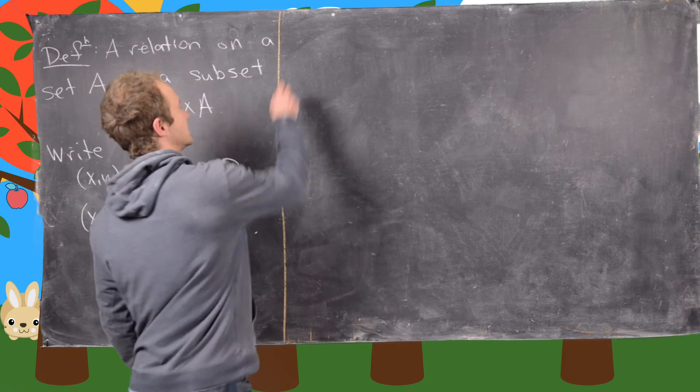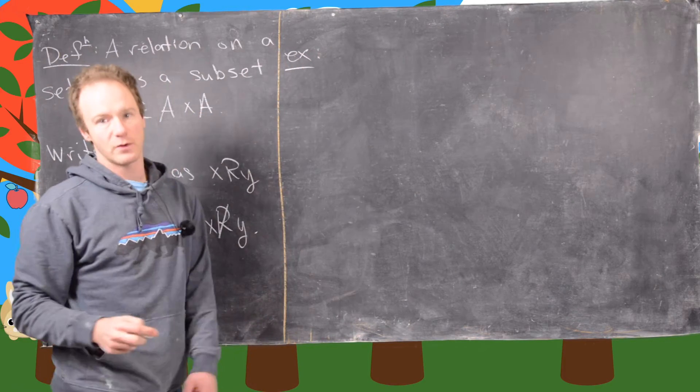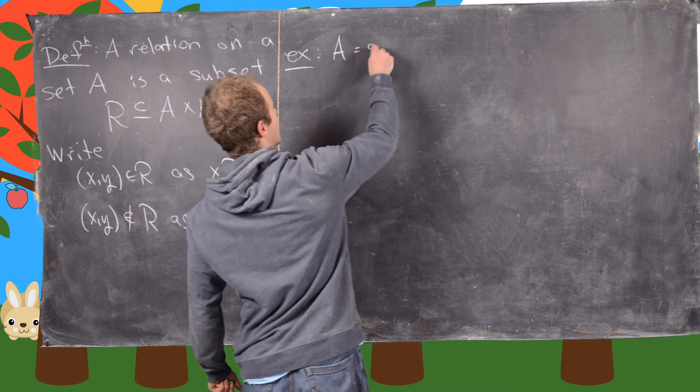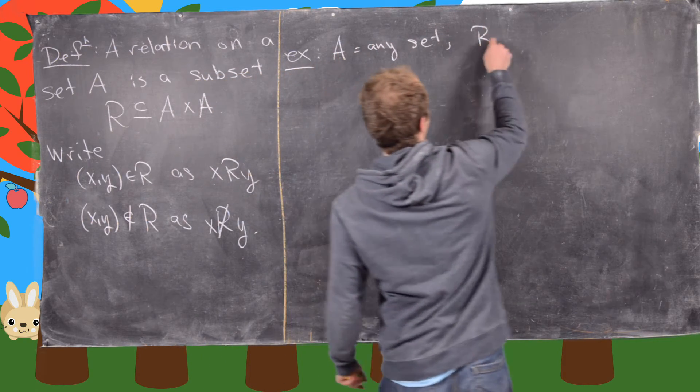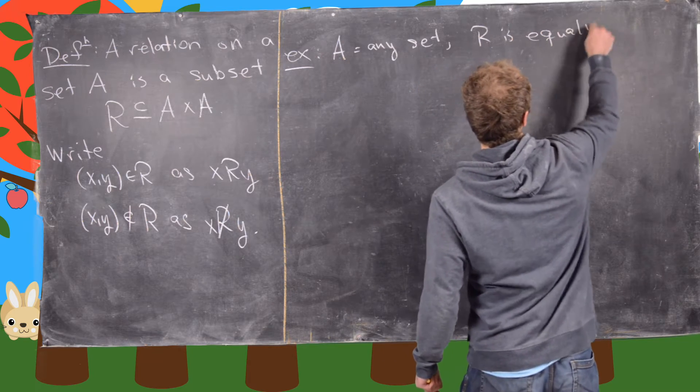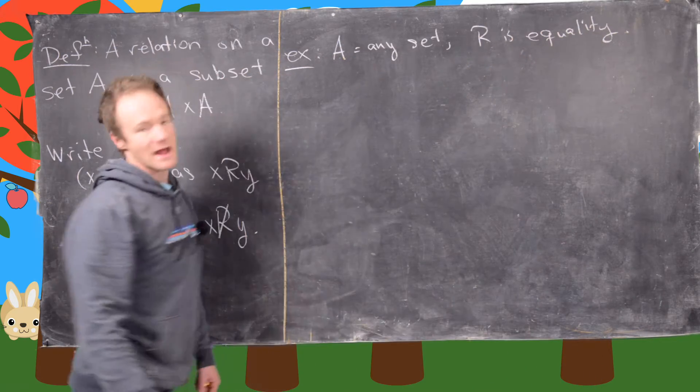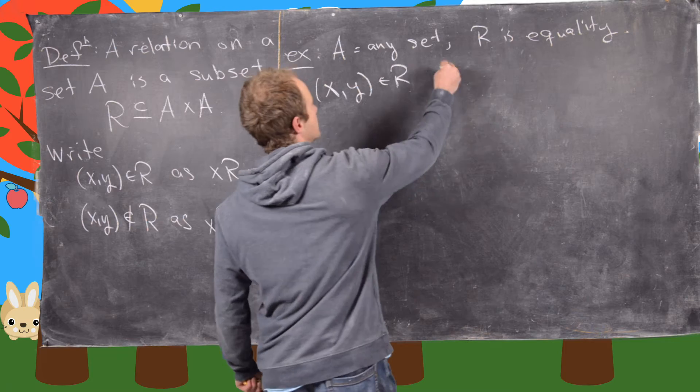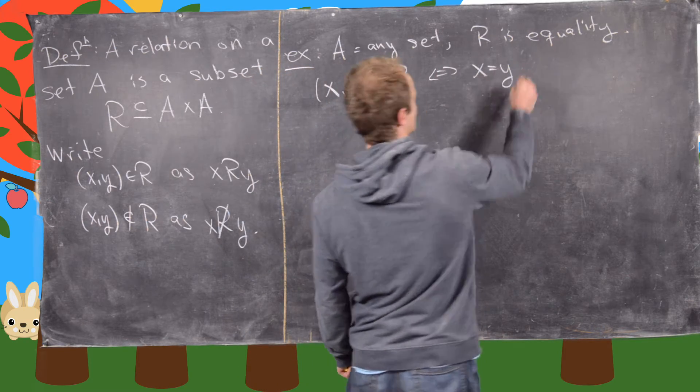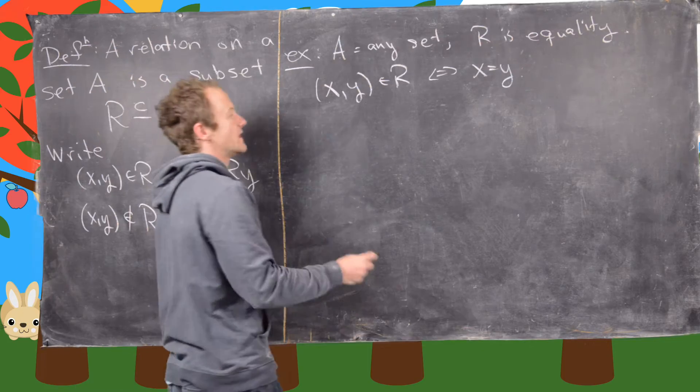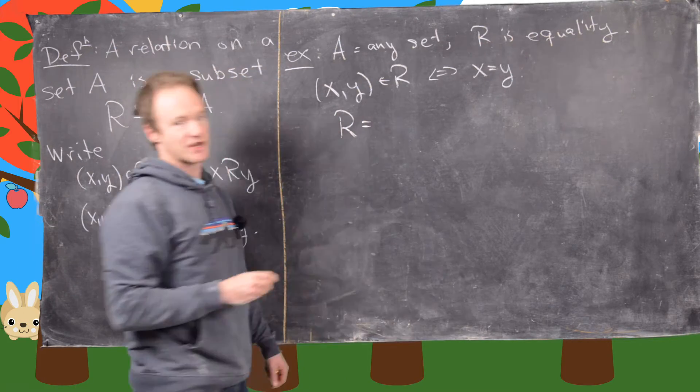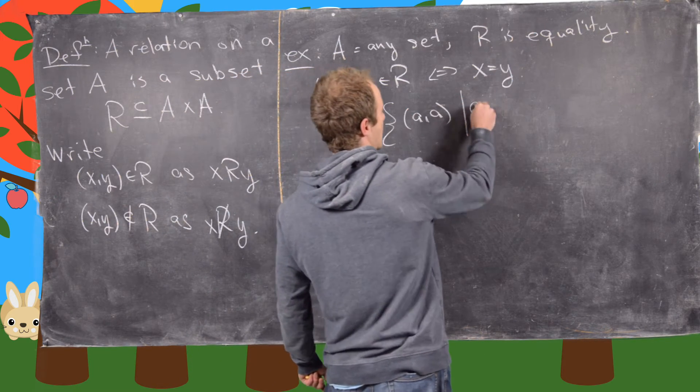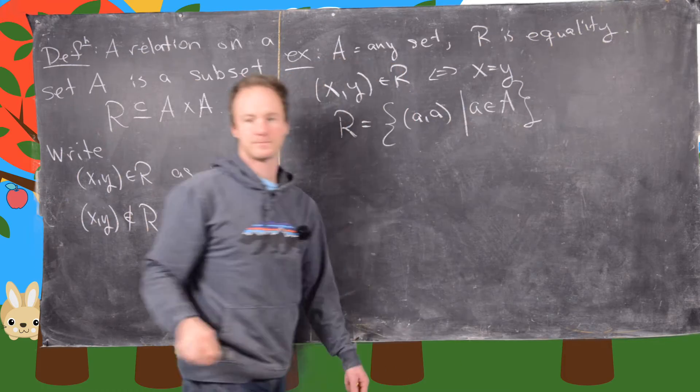So now let's look at some concrete examples of this. Maybe the first example, which is familiar to everyone, is A is any set and R is equality. So what I mean here is that X comma Y is in R if and only if X is equal to Y. And so in that case, we can write our relation as a subset of A cross A, like A comma A, where A is from capital A.